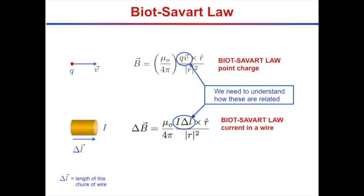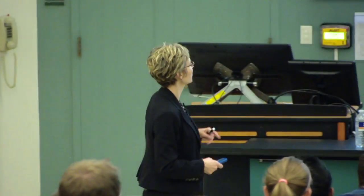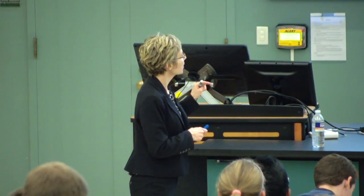The point charge equation is: magnetic field equals mu-naught over 4 pi, times QV cross r-hat, divided by r-squared. The Biot-Savart law for current in a wire looks very similar: mu-naught over 4 pi, times I delta-L cross r-hat, over r-squared. The current is the scalar I, and delta-L carries the vector dependence.